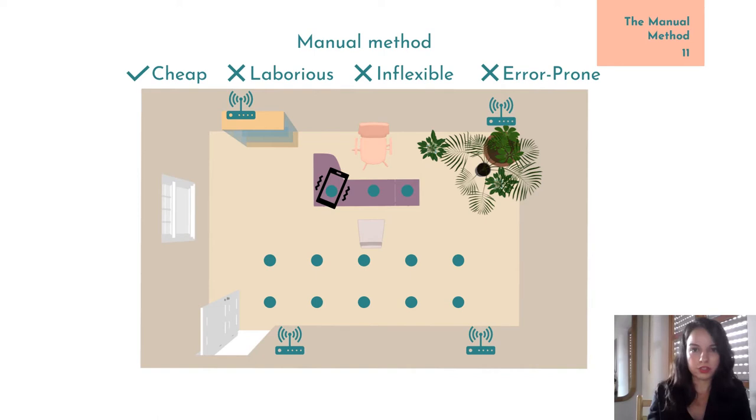Besides, having furniture inside that room makes these measurements all the more difficult. So the manual method of measuring ground truth locations might be cheap in terms of money, but it is expensive in terms of work involved. Moreover, it's inflexible when we need to move the setup to another room, and it is prone to good old human errors.